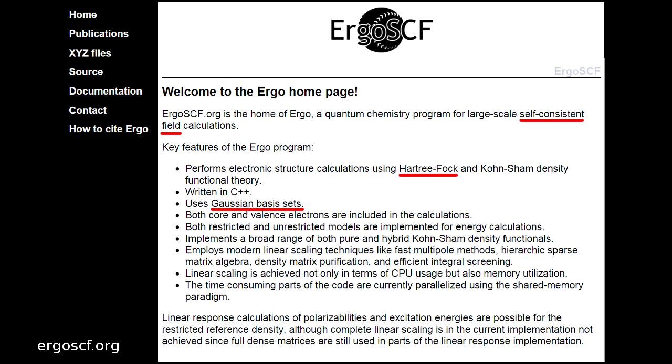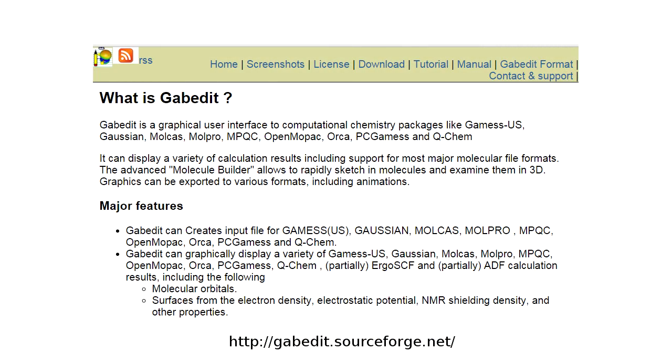Now, we'll use the open source program Ergo SCF to do Hartree-Fock calculations on a few different molecules. We'll also use the open source package GabEdit to visualize the results.